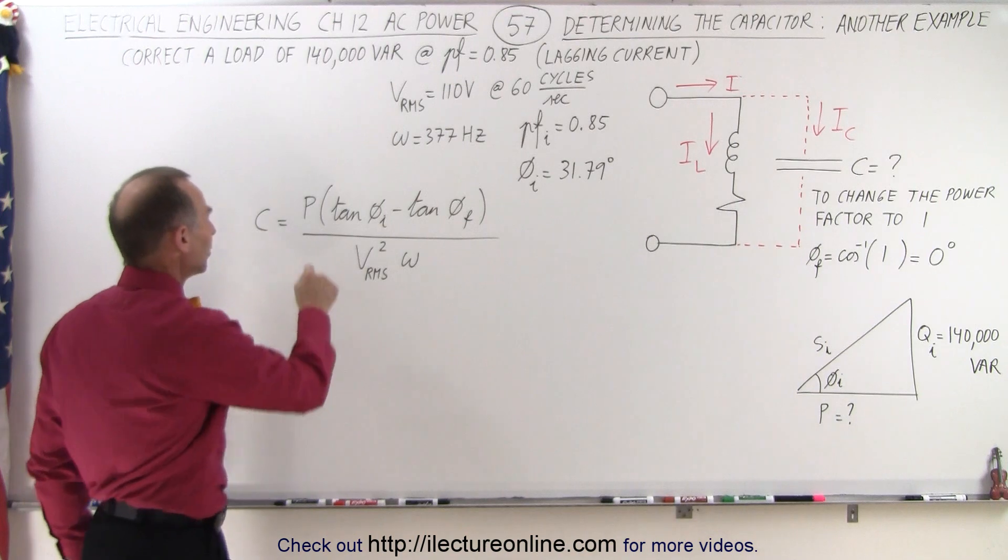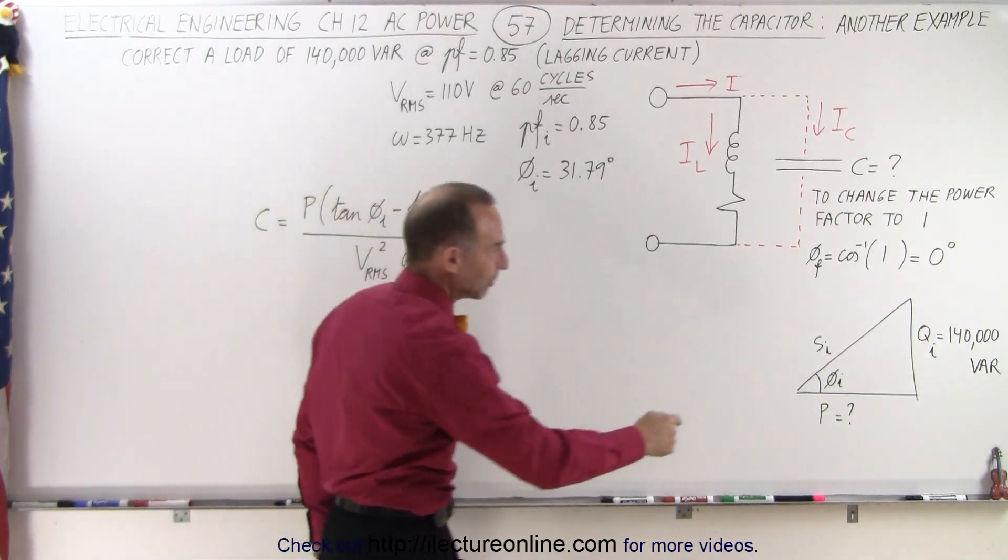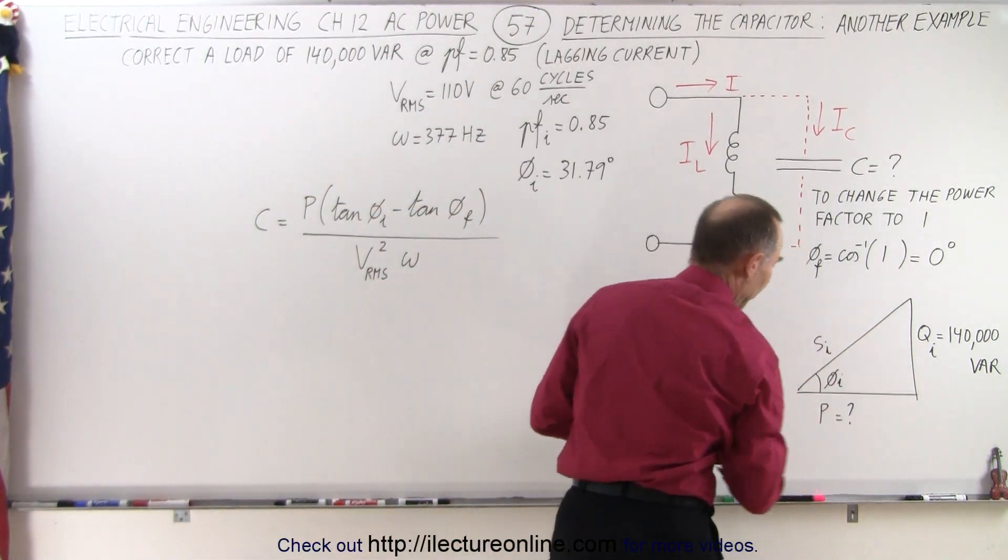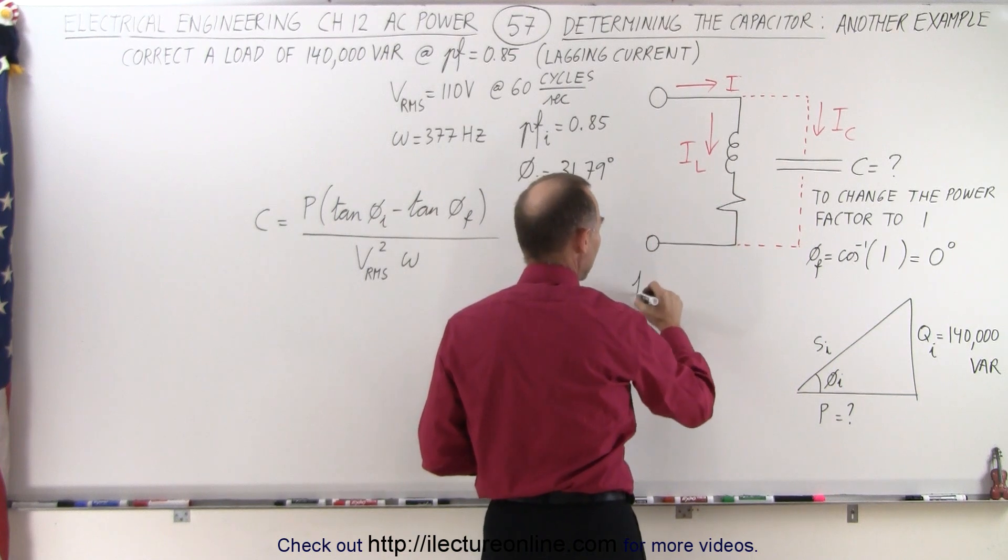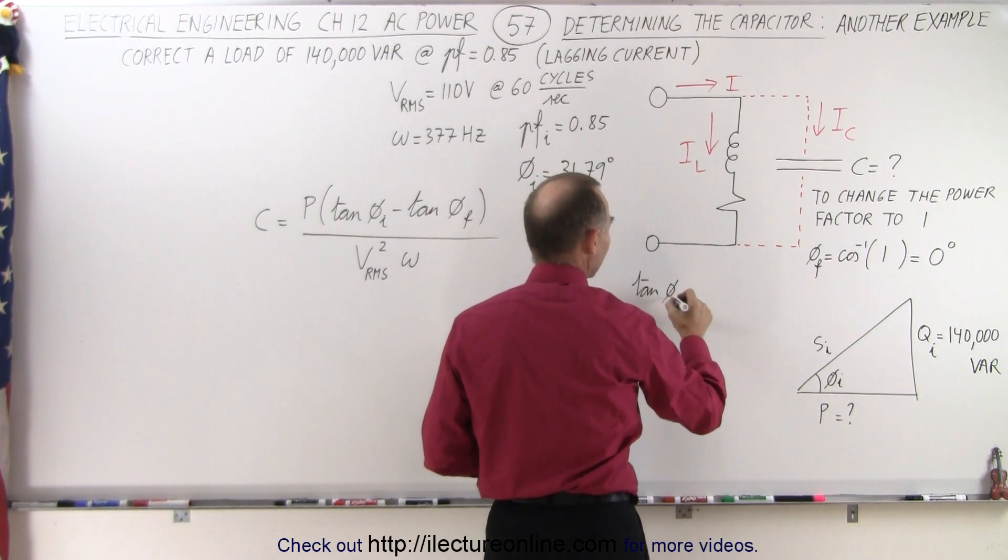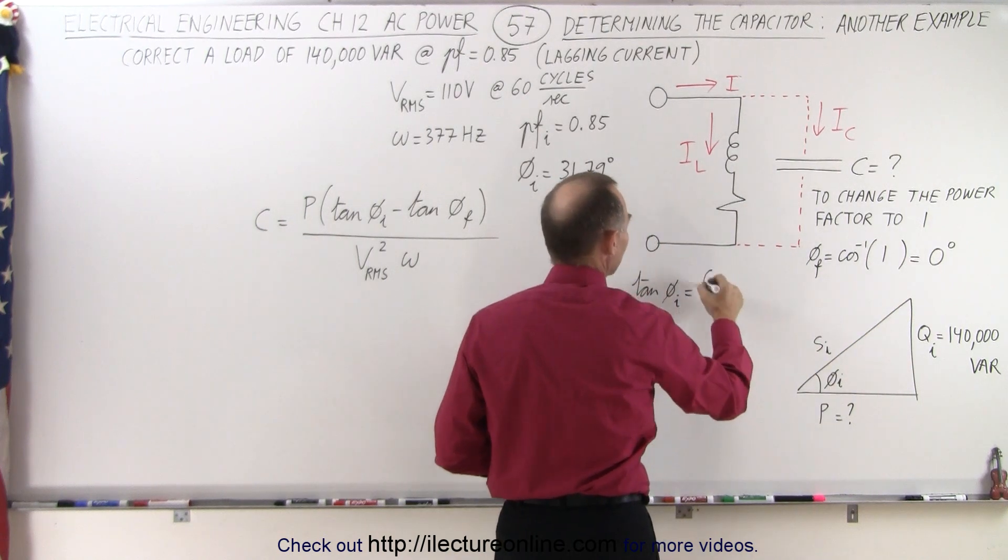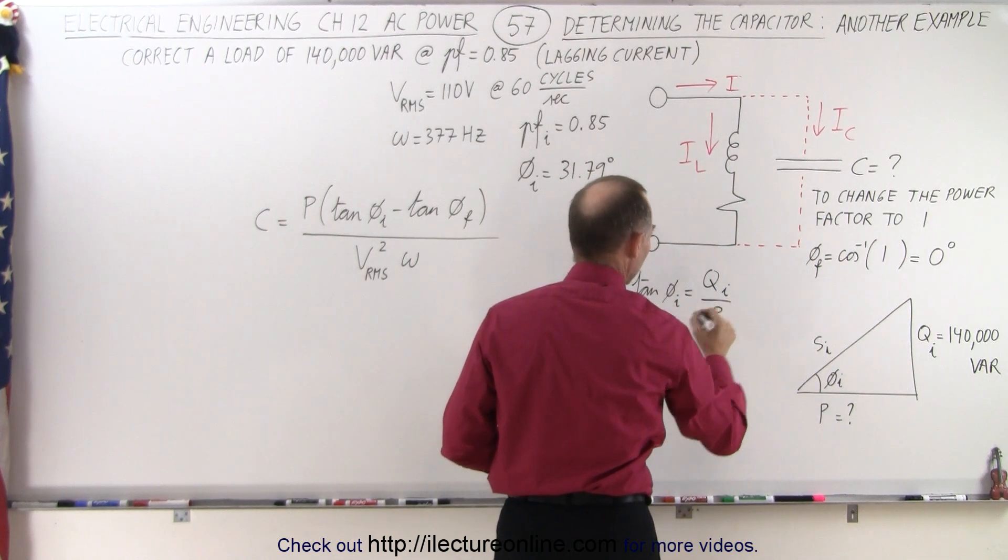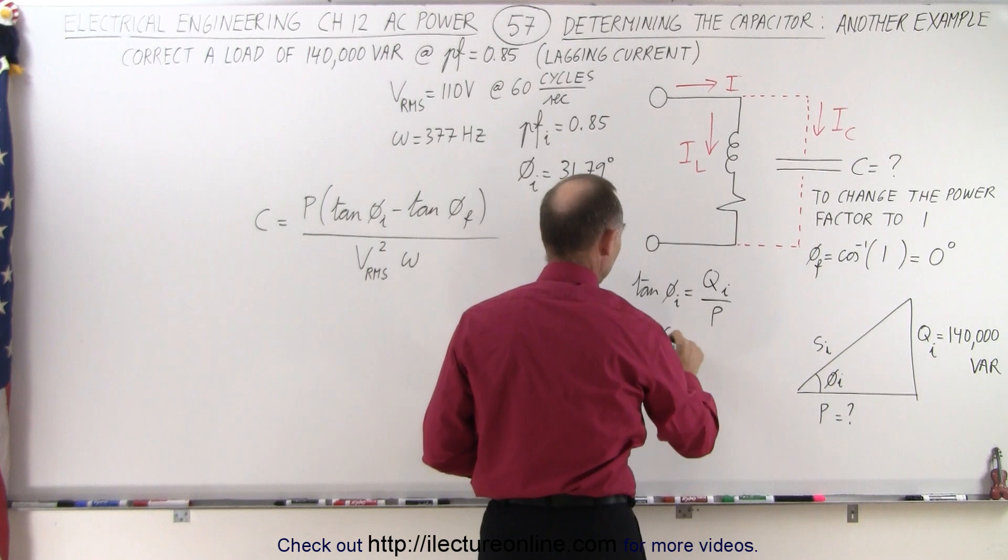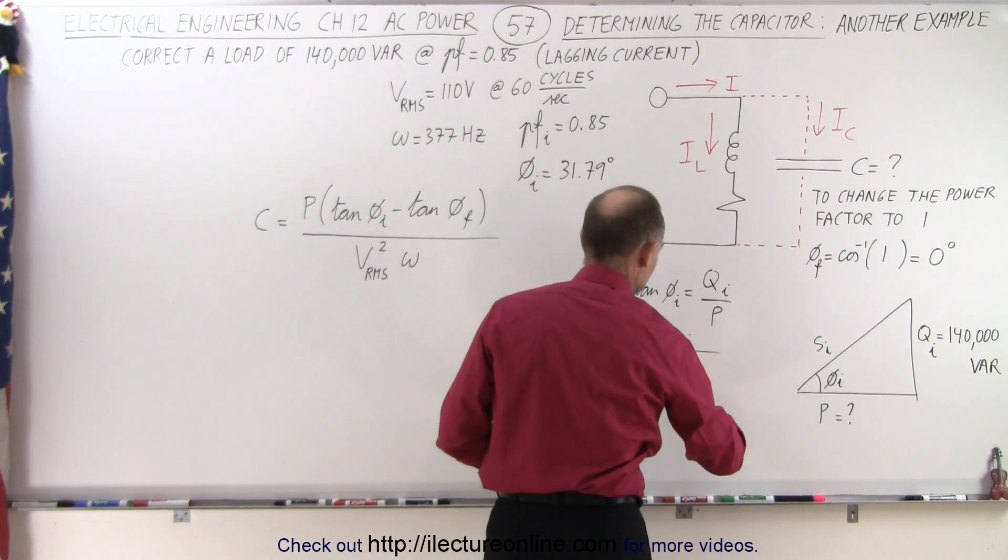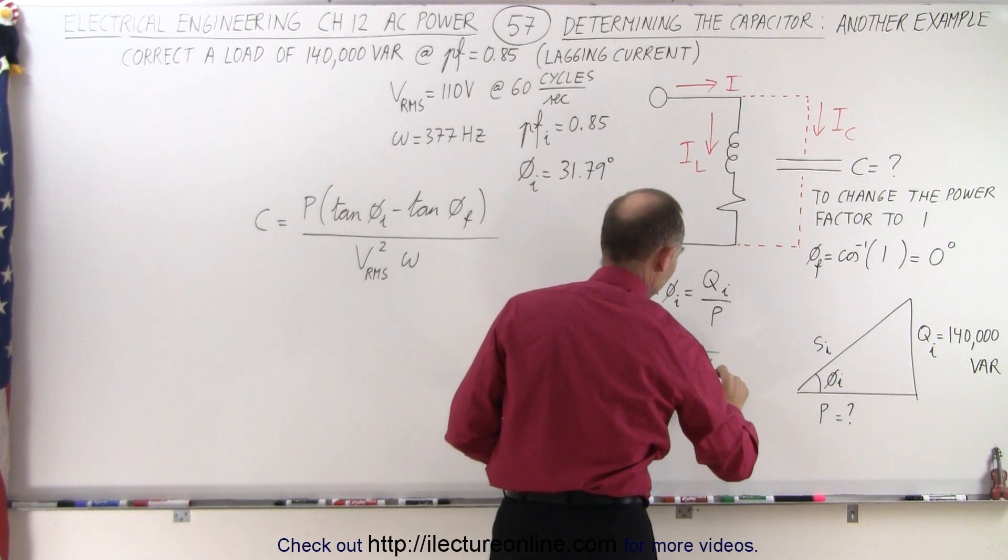So first what we need to find is the power. We're going to do that by using this triangle right here. We can see that the tangent of the phase angle is going to be equal to the ratio of the opposite side over the adjacent side, which is Q sub I over power, which means that the power is equal to Q sub I divided by the tangent of the initial phase angle.